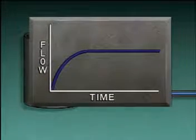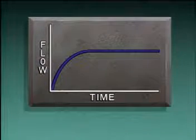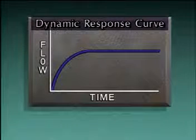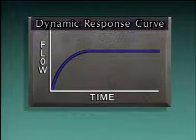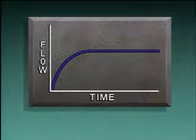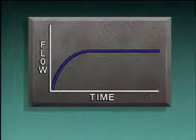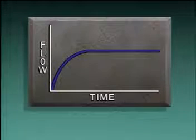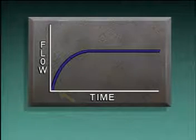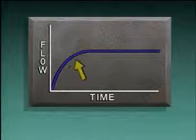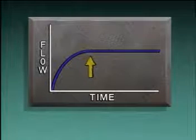The curve formed on the graph is often referred to as a dynamic response curve. It illustrates a basic fact about a system's response to operating changes: the response is gradual, not immediate.